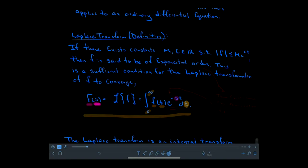People often call this the frequency domain, since s must have dimensions of inverse time. Since we will transform our data little f into a new domain, we need to give it a function name. The traditional name here is capital F, so that we can keep a mental tie to little f.